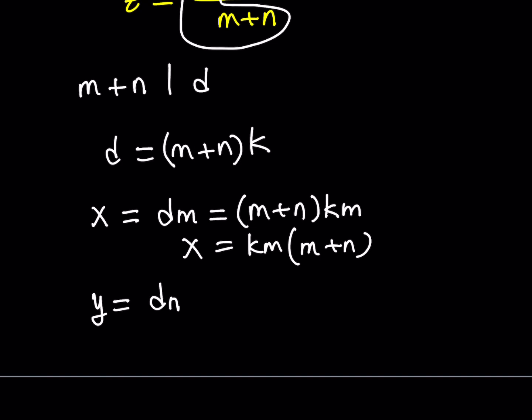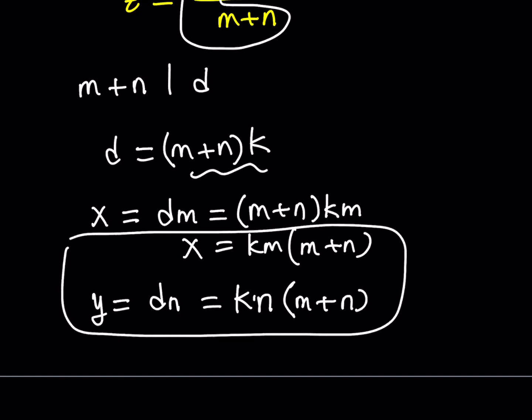And we can do pretty much the same thing for y. y is equal to dn and d is equal to this. So, we can just write it as kn multiplied by m plus n.